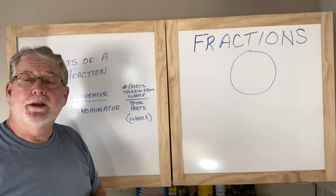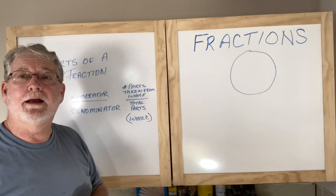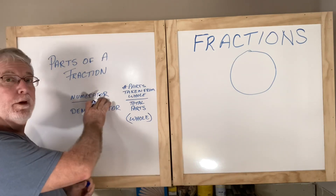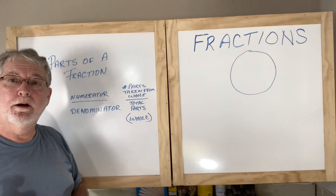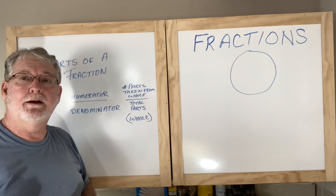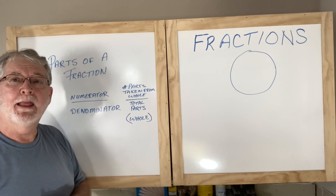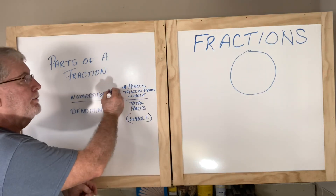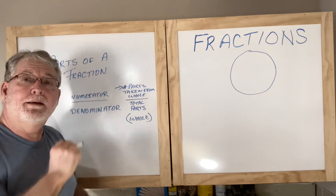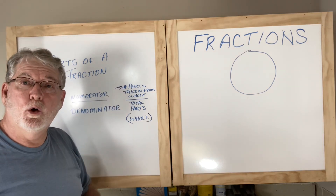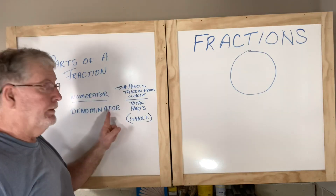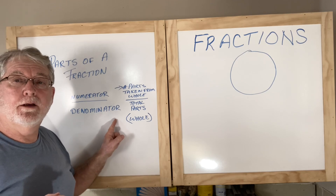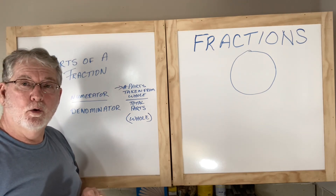The first thing I want to do is define the different parts of a fraction. There are really two parts: the numerator and the denominator. The numerator is how many parts have been taken from the whole, and the denominator is how many total parts there are that make up the whole.